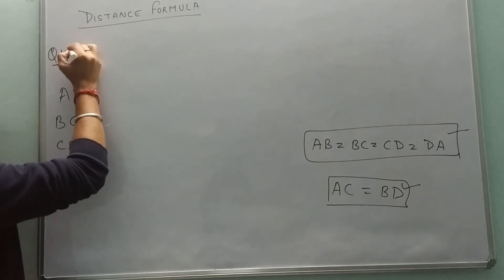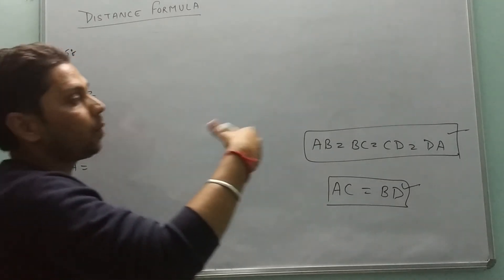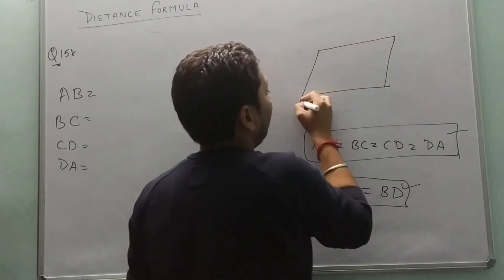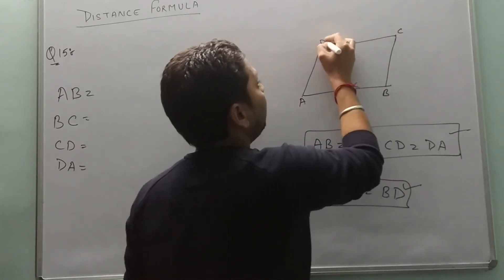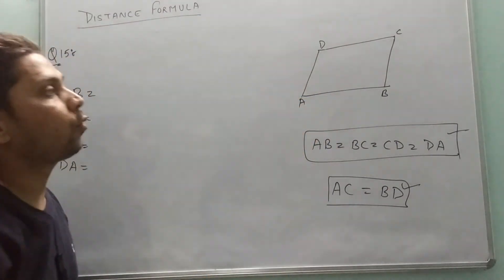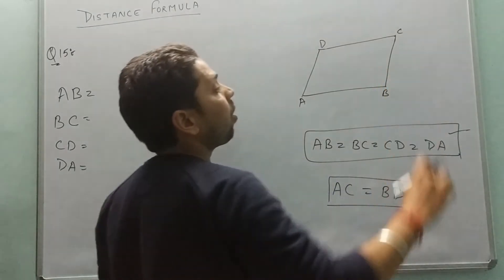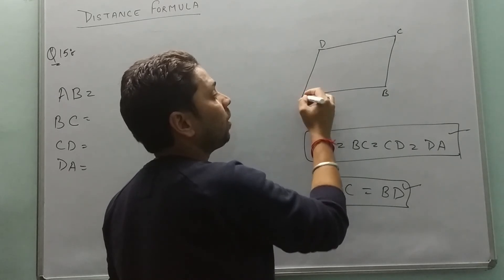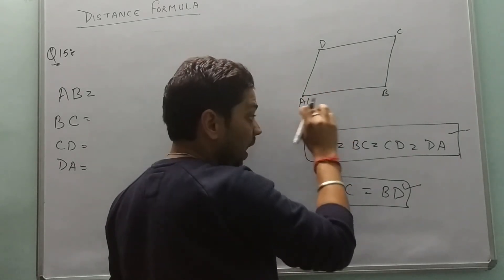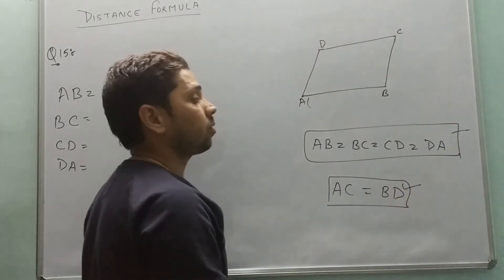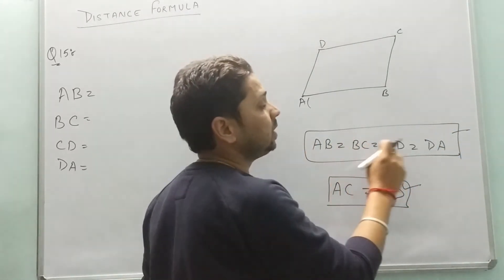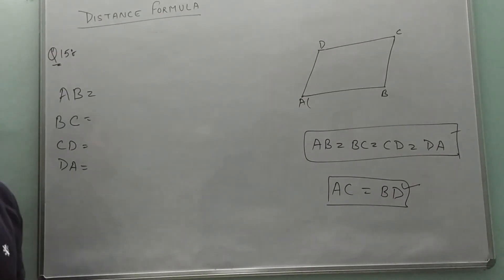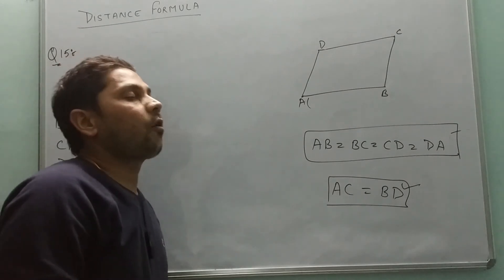Question number 15 is about a rhombus, where four points A, B, C, D are given. Prove that these are the vertices of a rhombus. First condition is the same as for a square: AB equals BC equals CD equals DA — all sides must be equal.